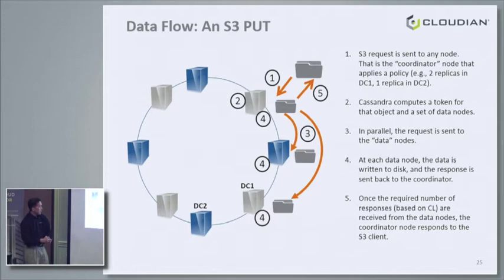We're at step three — requests go out to the data nodes. The response back is just an acknowledgment: we use HTTP, so it's a 200 OK. Question: Why is the node labeled differently as a 'data node' in step three? Answer: The data node is the one that stores the data for that request.